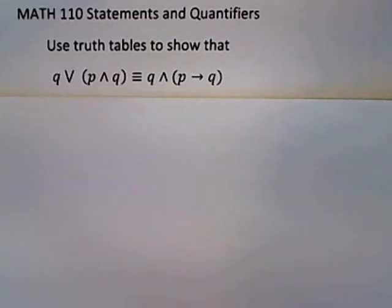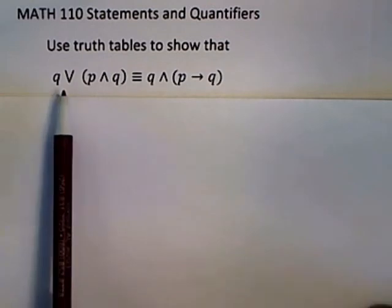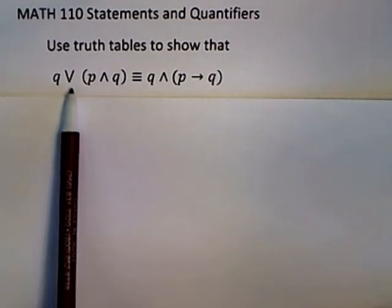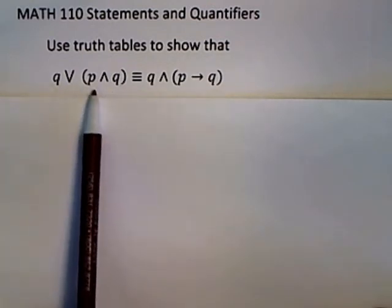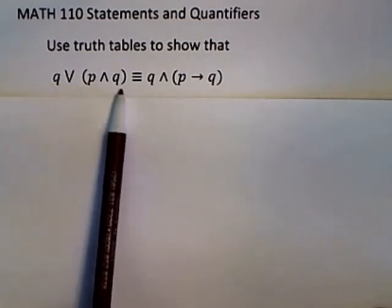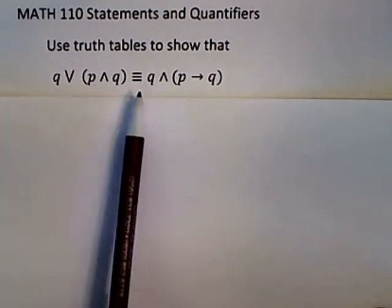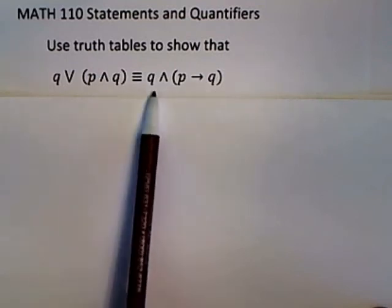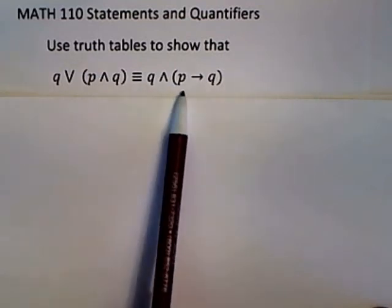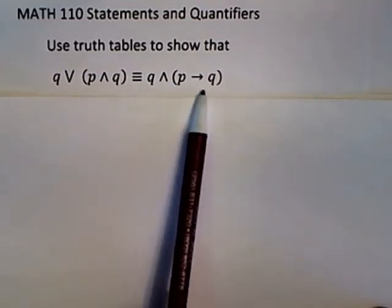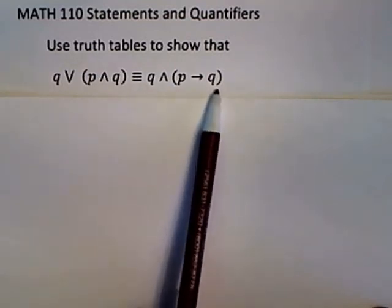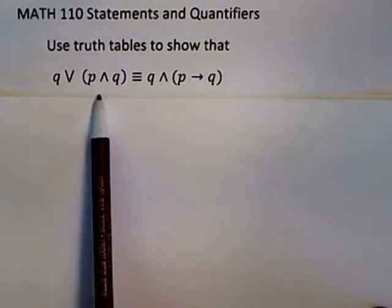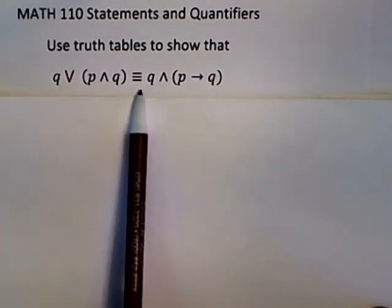This problem asks us to use truth tables to show that the statement on the left — Q or the compound statement P and Q — is equivalent to the statement on the right, which is Q and the compound statement P implies Q. We need to show these are equivalent to each other.